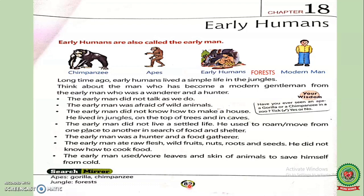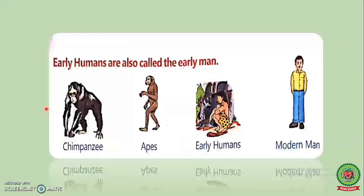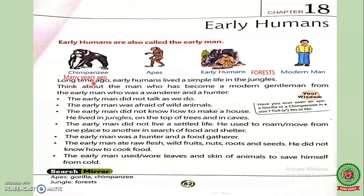Open your book at page 82, chapter 18: Early Humans. Early humans are also called the early man. It is believed that early man came from a chimpanzee or an ape, and later on these animals changed into early men after thousands of years. Early men then developed into modern men. Long time ago, early humans lived a simple life in the jungles.